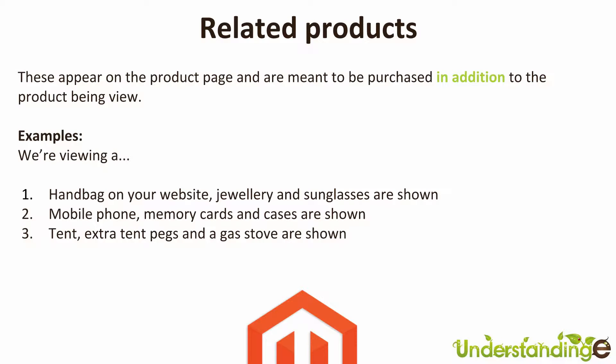The same applies for a mobile phone — you might show memory cards, cases, or screen protectors along those lines. And if you've got a tent, then related products would be tent pegs and a gas stove to go with it.